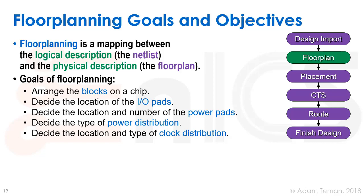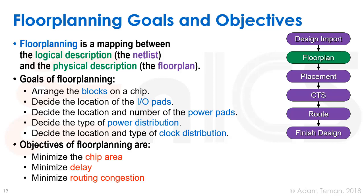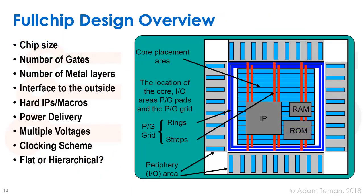The objectives are: we want to get as small a chip area as possible to make our design as cheap as possible, but we also want to meet our timing constraints — minimize delay — and we can only do this if we minimize routing congestion, or else we won't be able to finish our detailed route.